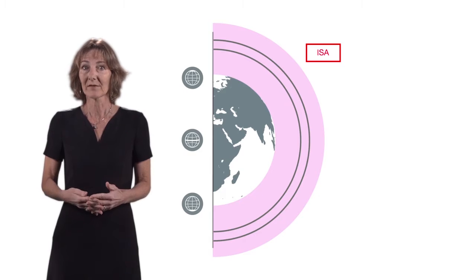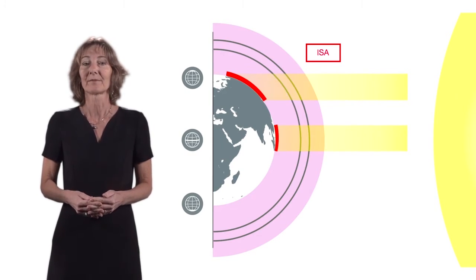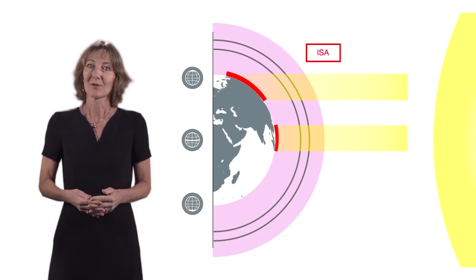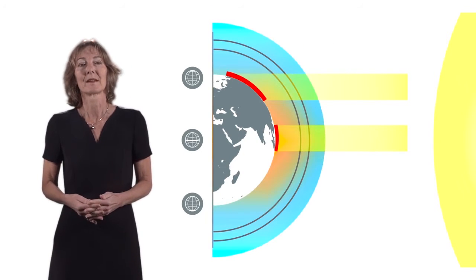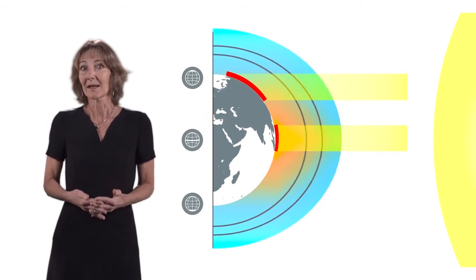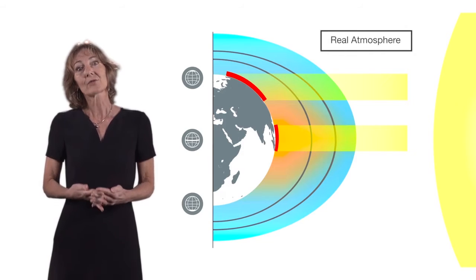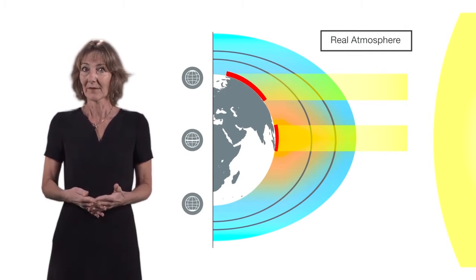How many layers are in the atmosphere? Five. Earth's atmosphere can be divided — called atmospheric stratification — into five main layers. Not including the exosphere, the atmosphere has four primary layers, which are the troposphere, stratosphere, mesosphere, and thermosphere.